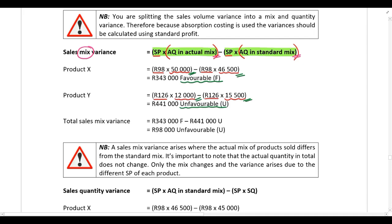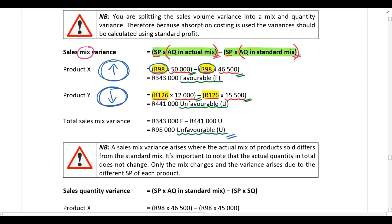Overall, the sales mix variance is unfavorable. Product X has a lower standard profit per unit and Product Y has a higher standard profit per unit. They sold more of Product X and less of Product Y — more of the lower-profit product — making the overall mix variance unfavorable. Alternatively: they sold less of the product with the higher standard profit per unit.